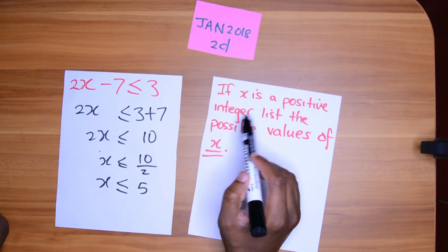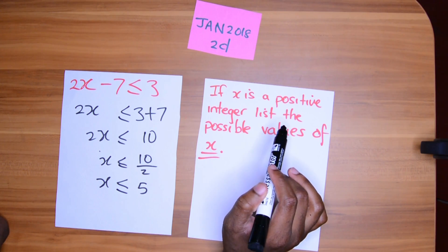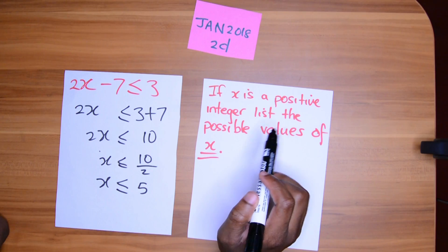What I actually notice now, if x is a positive integer. So like positive integers are like 1, 2, 3, 4, 5. This is the possible values of x.